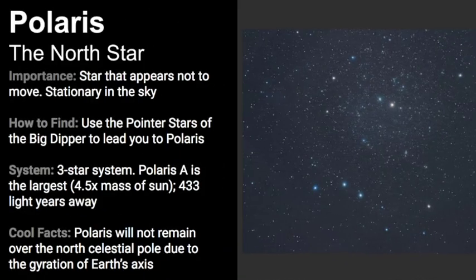Well, we have come to the end of our video about Polaris, which is also known as the north star. I want to take a moment to review everything that we covered in this video. The importance of Polaris is that it is a star that appears to not move in the sky. Since it is stationary, this is a very important star in terms of navigation. It helps you find the direction of north. In order to find it, you need to use the pointer stars of the Big Dipper, and it will lead you straight to Polaris. From there you can find the rest of the Little Dipper.